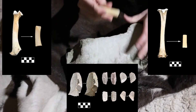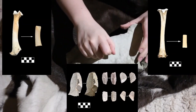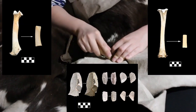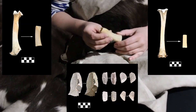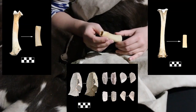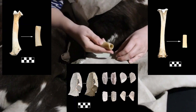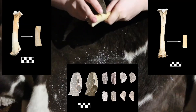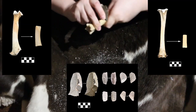As you can see, the whole experiment was recorded. As the raw material, I used sheep bones, a Świeciechów flint, a sandstone, and a cowhide. All those raw materials have been confirmed, except for the cowhide, at corded ware sites.